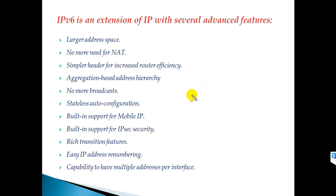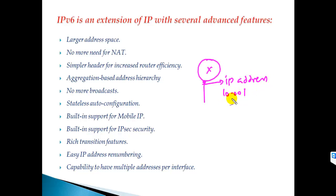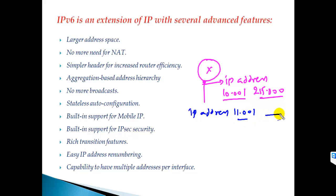Another advantage is the ability to have multiple IP addresses on a single interface. In IPv4, on a router interface you assign one IP address like 10.0.0.1 with a subnet mask, and if you assign another IP address like 11.0.0.1, it automatically overrides the previous one. If you want to use both, you have to use the keyword 'secondary' — and the first address will still be preferred over the secondary one.